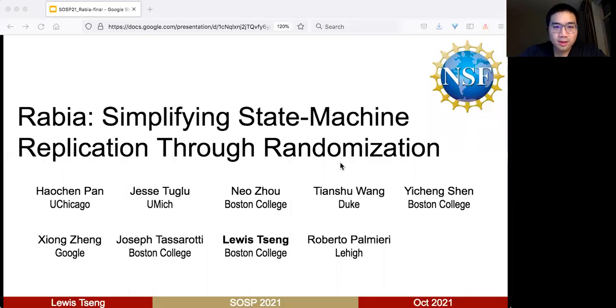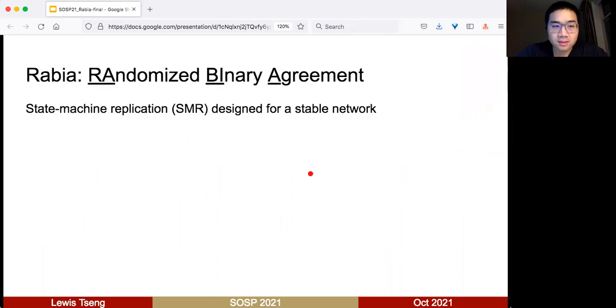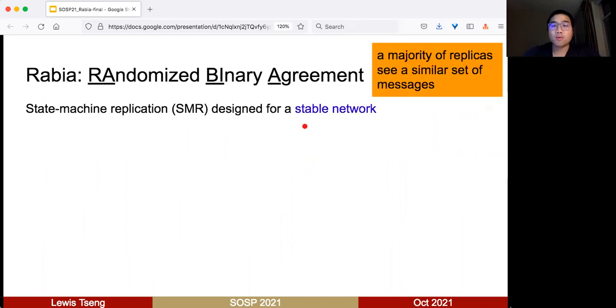Hello, this is Luis. I'm going to present Rabia. Rabia is a consensus protocol designed for state machine replication with a focus on stable networks. A stable network is one where a majority of replicas see a similar set of messages, and we find this property holds for most modern cluster and cloud networks.